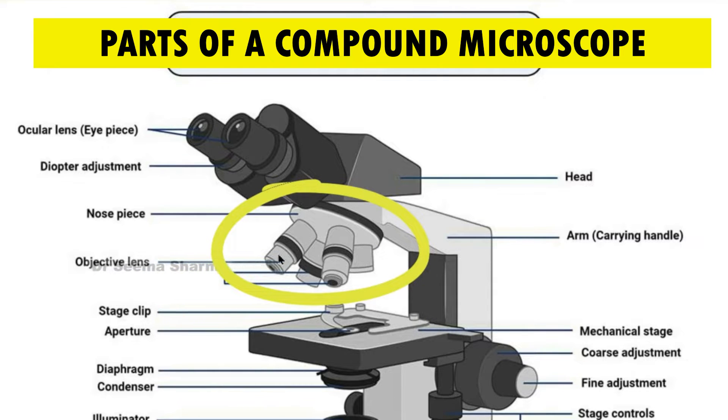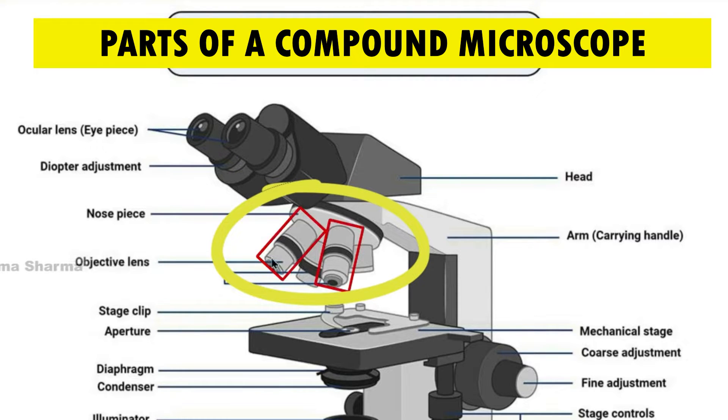Beneath the eyepiece, there is a nose piece, and they both are connected with each other with the help of head. This nose piece is also very important. Pay attention to these tubular structures — they are called objective lenses.